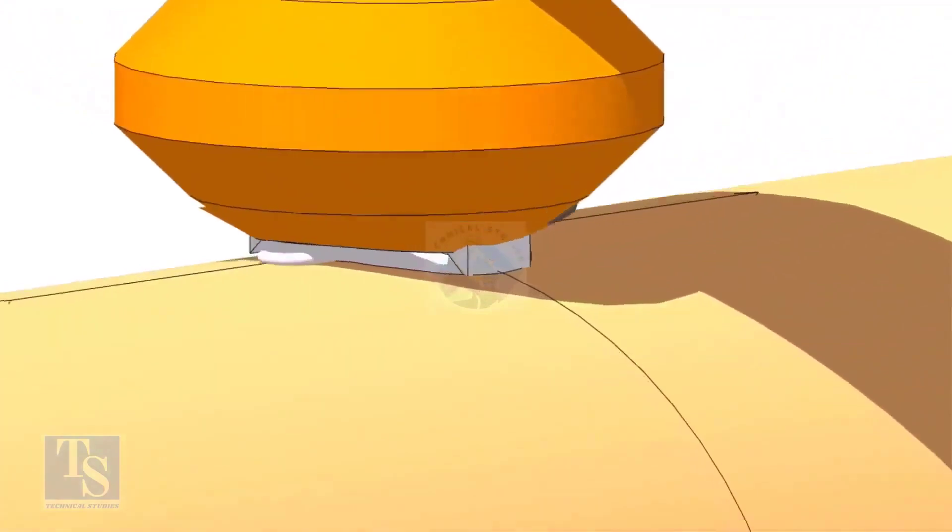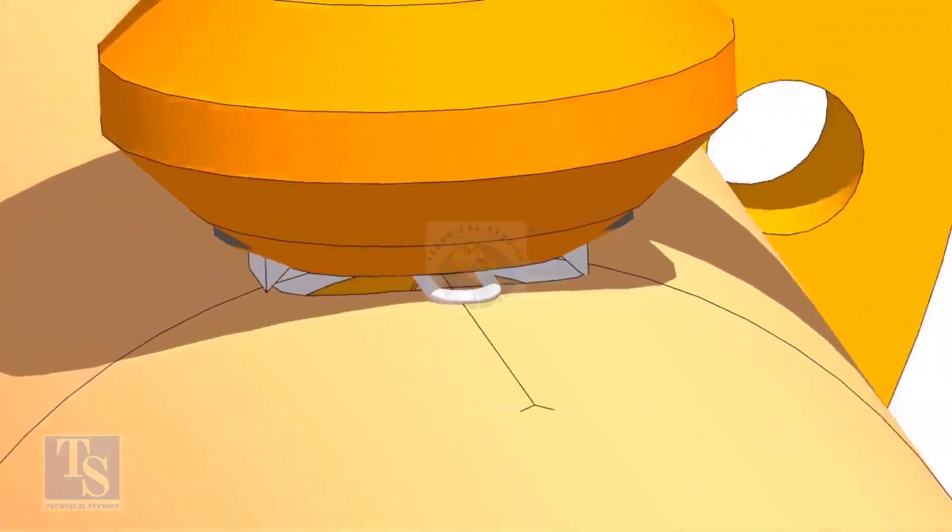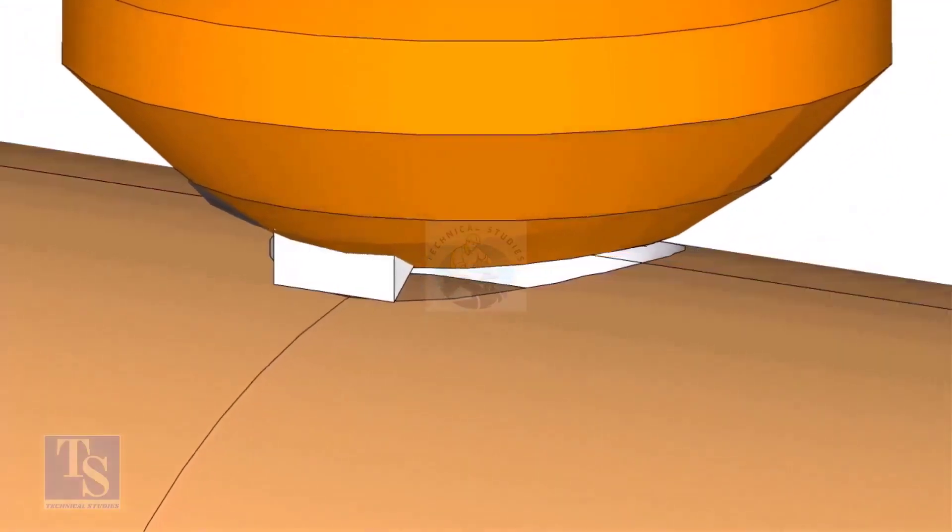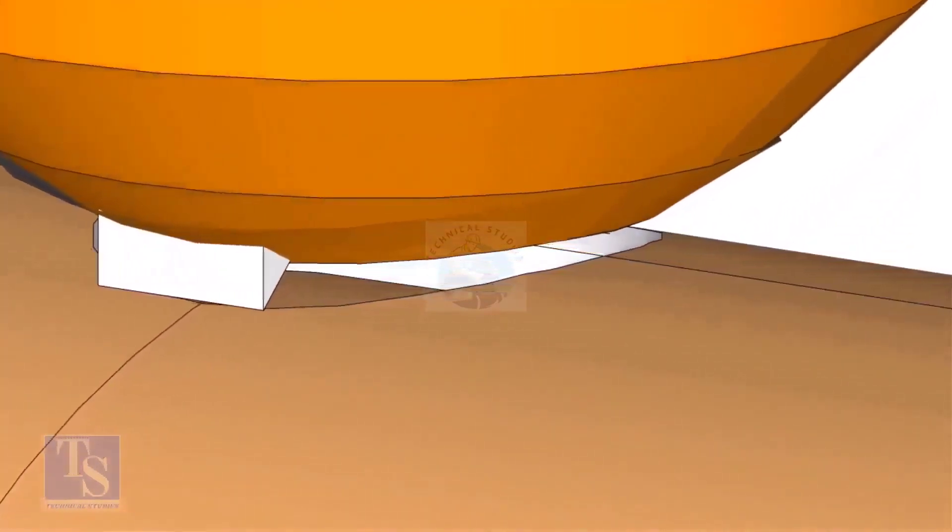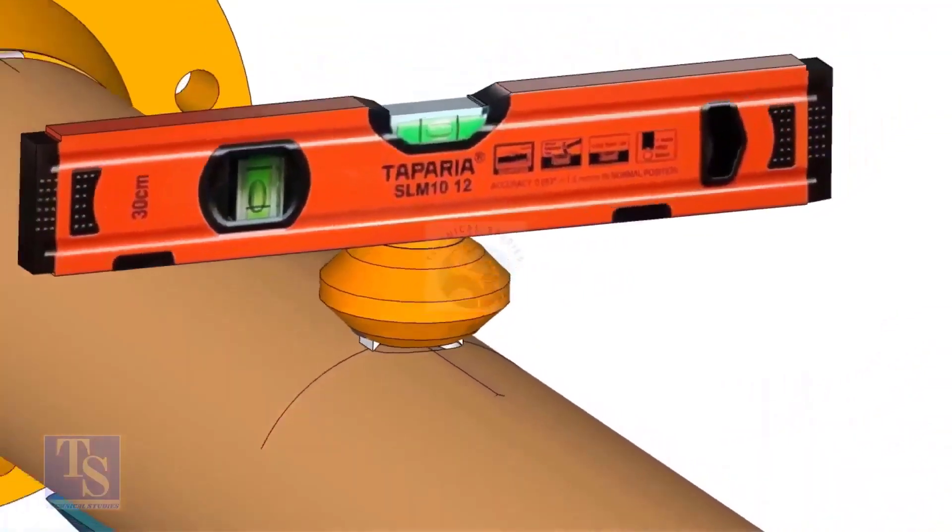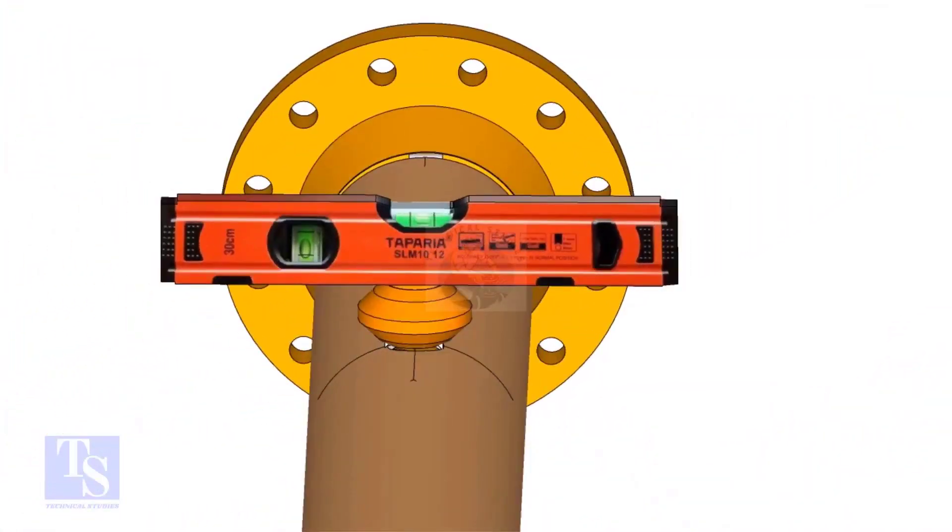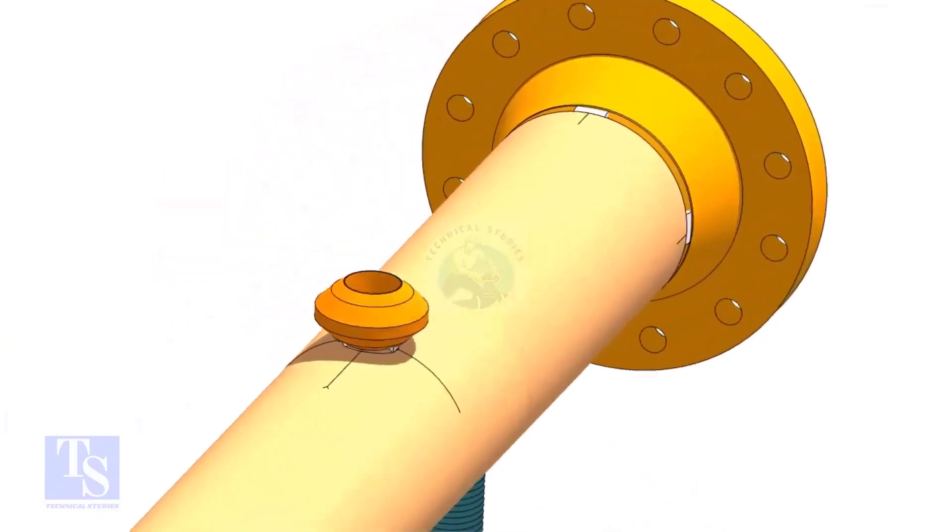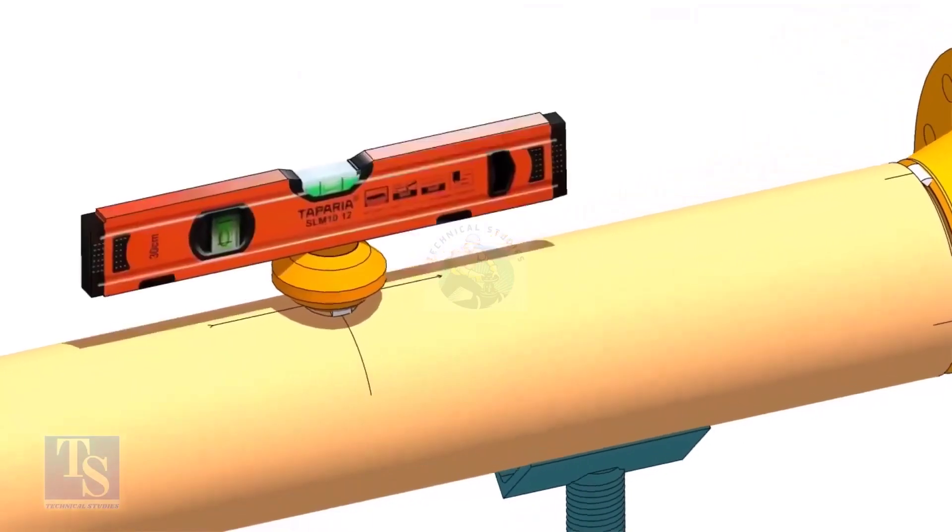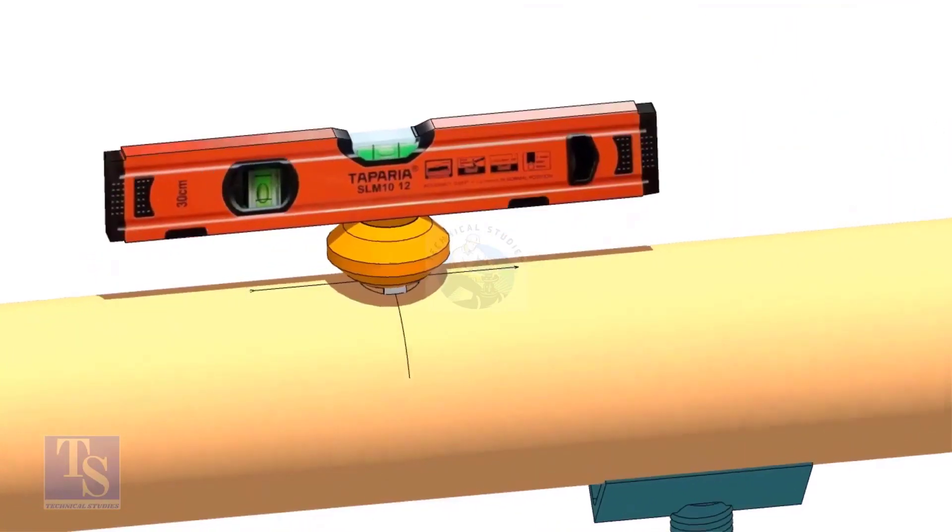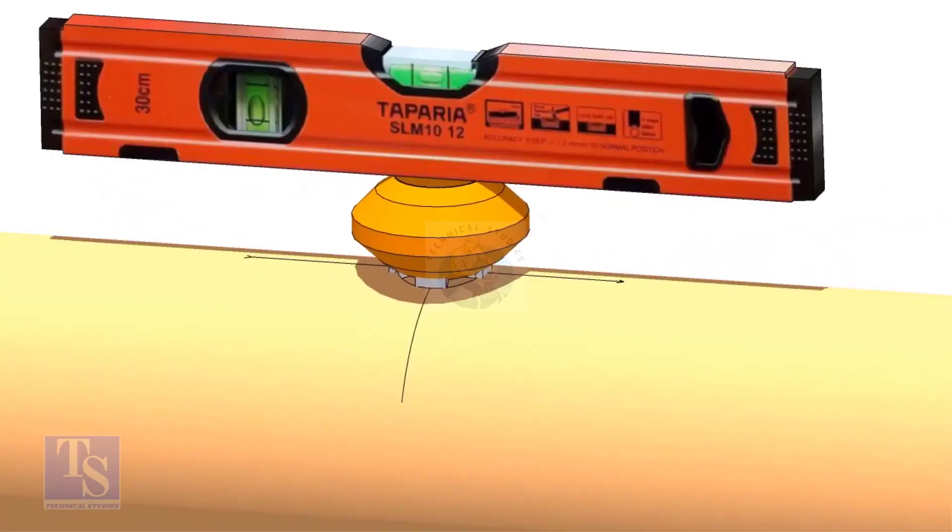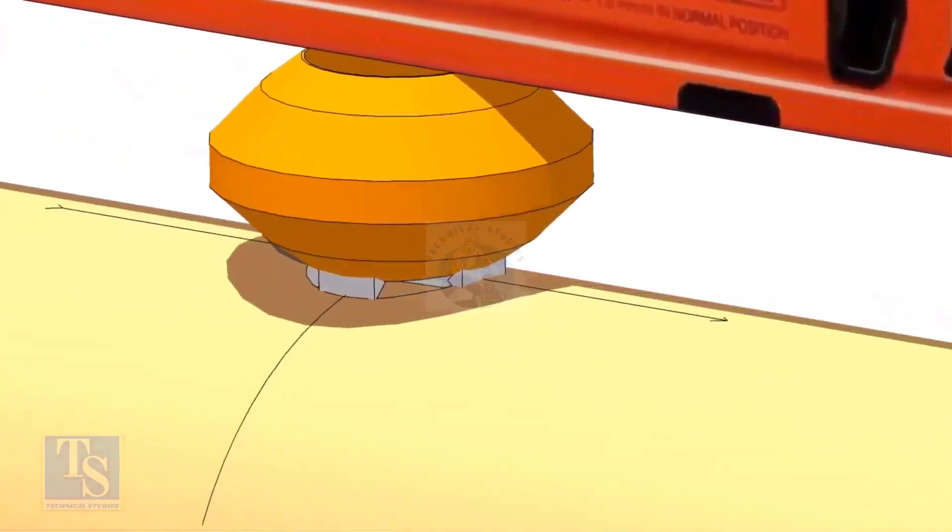Check the level again. If the level is correct on both ways, tack weld on the longitudinal side.